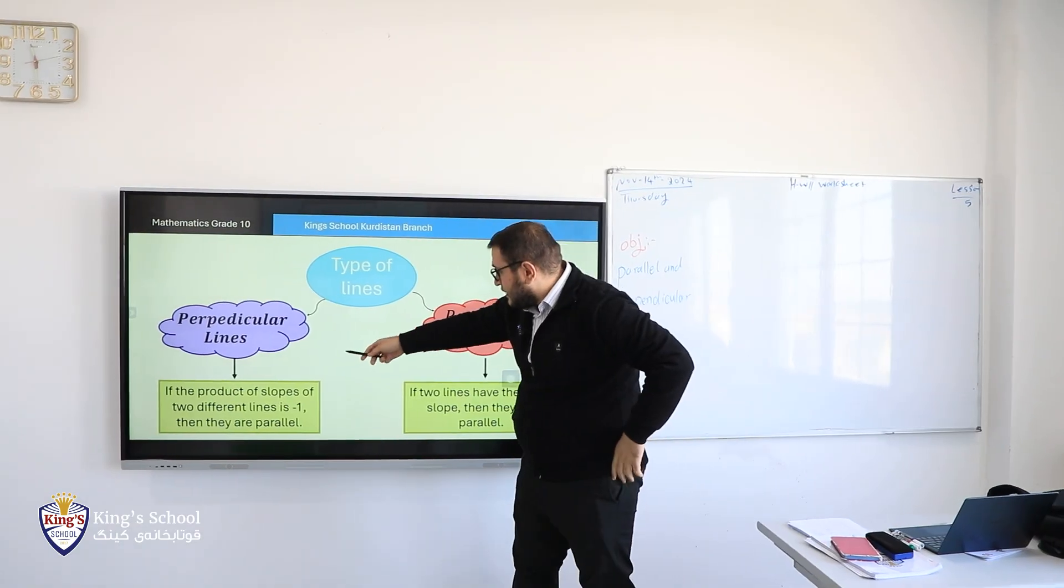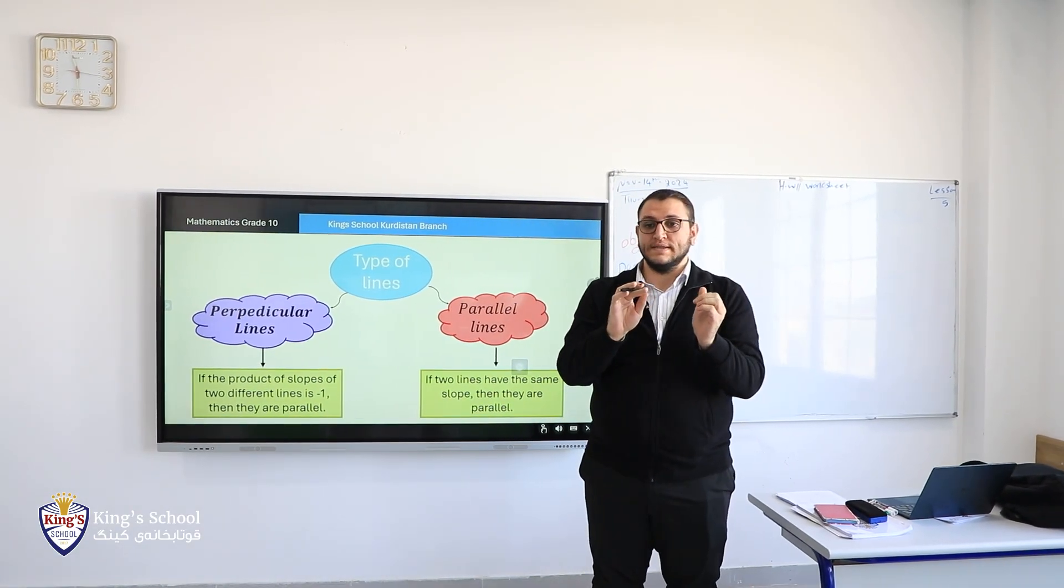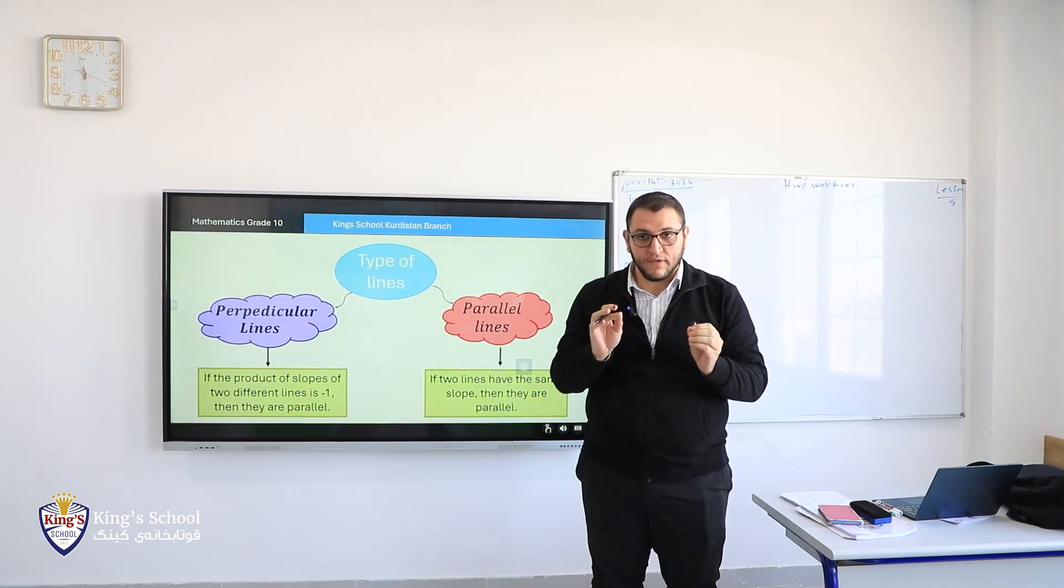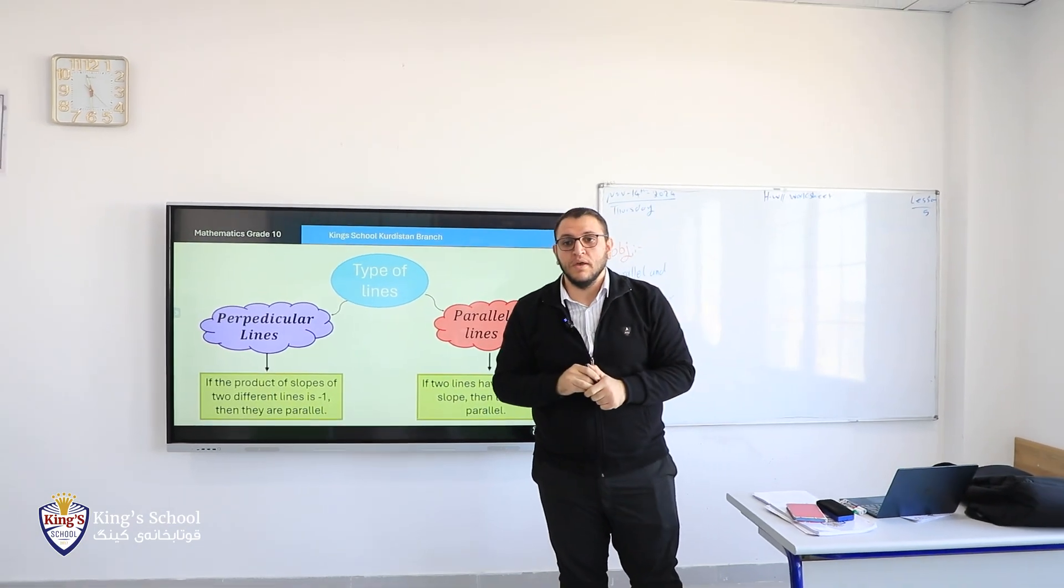Excellent. When we have, if the product of both slopes, when we have slopes of both equations are negative one, when you multiply them, then these two lines are going to be perpendicular.